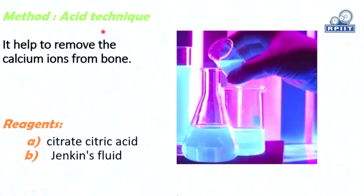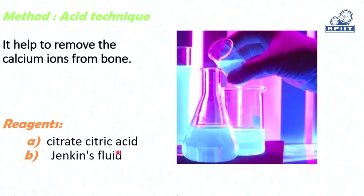Method — Acid Technique: The method used here is the acid technique. It helps to remove the calcium ions from bone. The acid technique helps to remove calcium from inside the bone. The reagents used for this technique are citrate, citric acid, and Zenker's fluid.